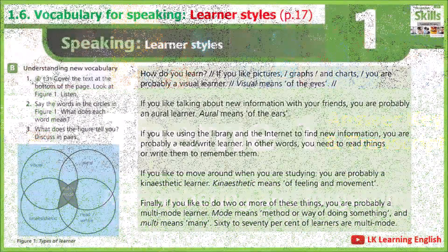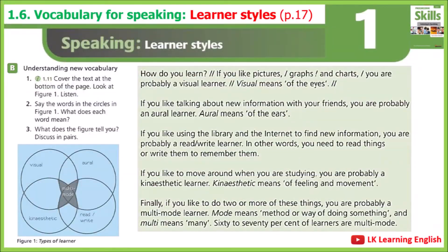Lesson 1.6: Vocabulary for speaking — types of learner. Exercise B1: cover the text at the bottom of the page. Look at figure 1. Listen. How do you learn? If you like pictures, graphs and charts, you're probably a visual learner. Visual means 'of the eyes.' If you like talking about new information with your friends, you're probably an oral learner.